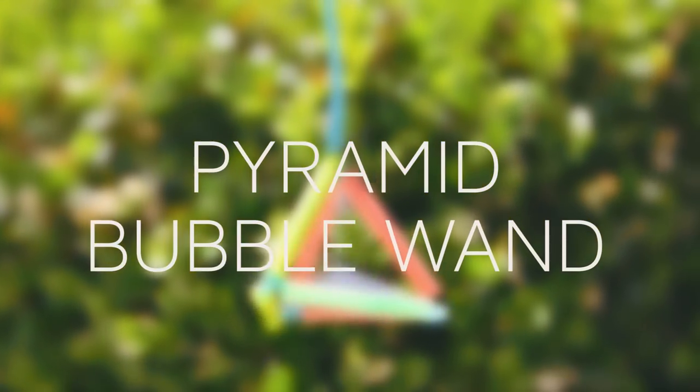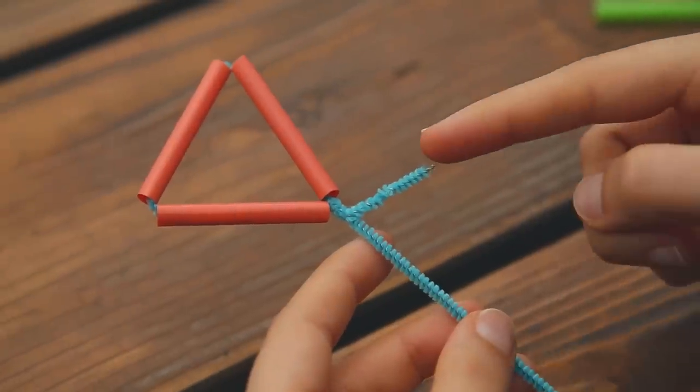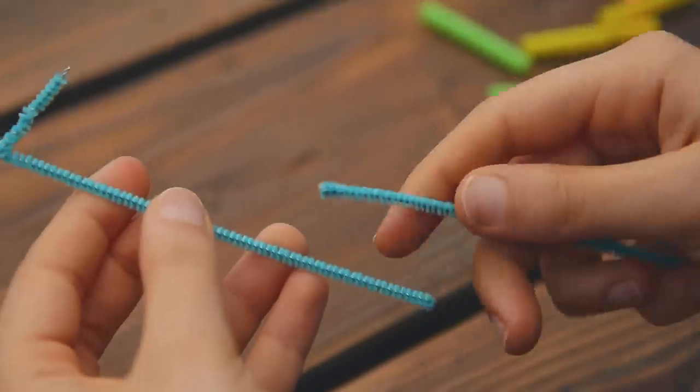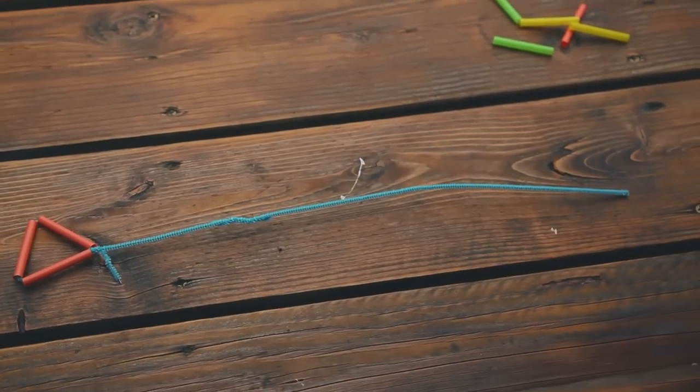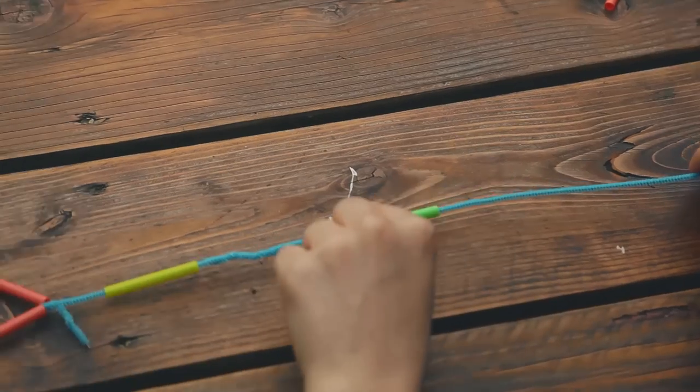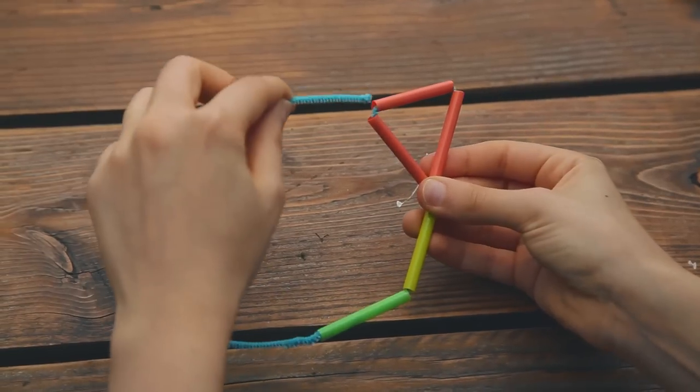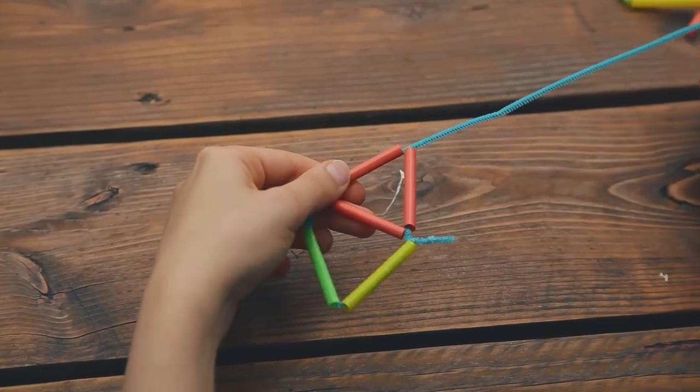Now let's turn the triangle into a really cool pyramid. When you start, make sure to leave the short end of the pipe cleaner sticking out. Twist the second pipe cleaner onto the long end of the first pipe cleaner. Slide two straw pieces onto the pipe cleaner. Push the end of the pipe cleaner through the straw to make a second triangle.